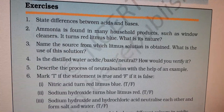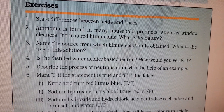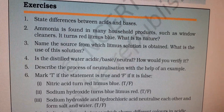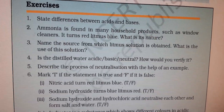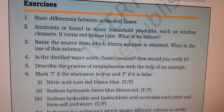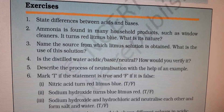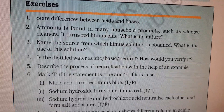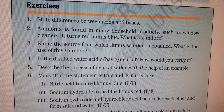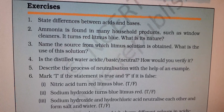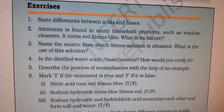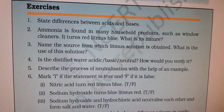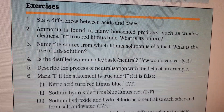Question 3: Name the source from which litmus solution is obtained and what is its use. Litmus is obtained from lichen. Litmus is an indicator — it helps us identify acids and bases. If red litmus solution turns blue, it is a base; if blue litmus solution turns red, it is an acid.